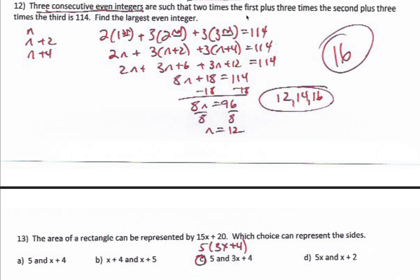Writing it out: two times the first plus three times the second plus three times the third equals 114. The first is n, so two times the first is 2n. Three times the second is 3(n+2), and three times the third is 3(n+4), and that equals 114.